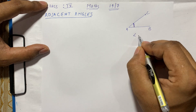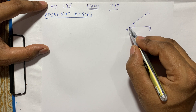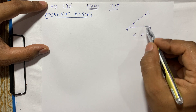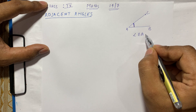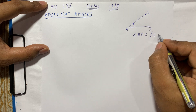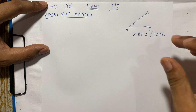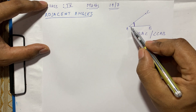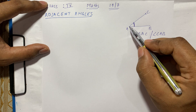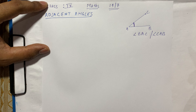If you want to write this angle, where both lines intersect is where we find the vertex, and we write it in the center. The rest of the two points, B and C, one is first and the other is second. So I can write angle BAC or angle CAB — it doesn't make a difference. The intersection point is always written in the center.